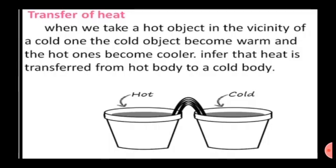When we take a hot object in the vicinity of a cold one, the cold object becomes warm and the hot one becomes cooler. We can infer that heat is transferred from hot body to a cold body. Why do we wear woolen clothes in winter? Wool is a bad conductor of heat. We wear woolen clothes to maintain our body temperature and also for protecting ourselves against cold air.